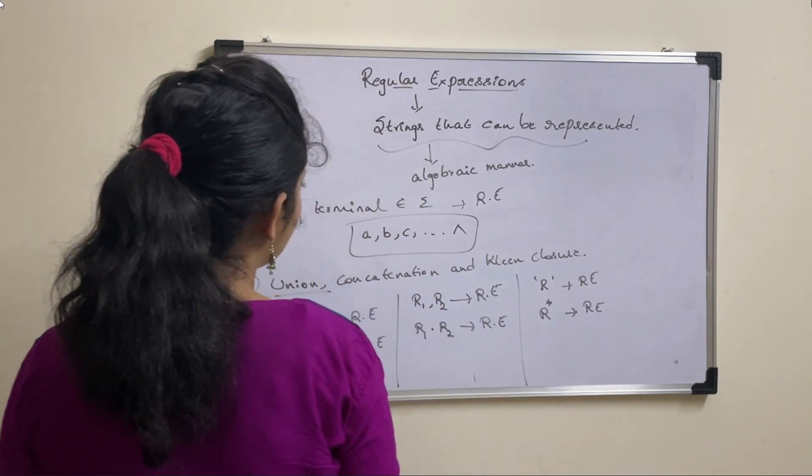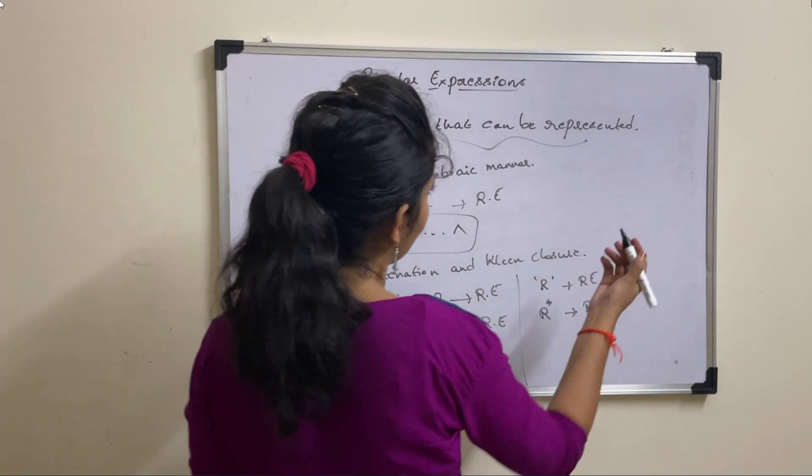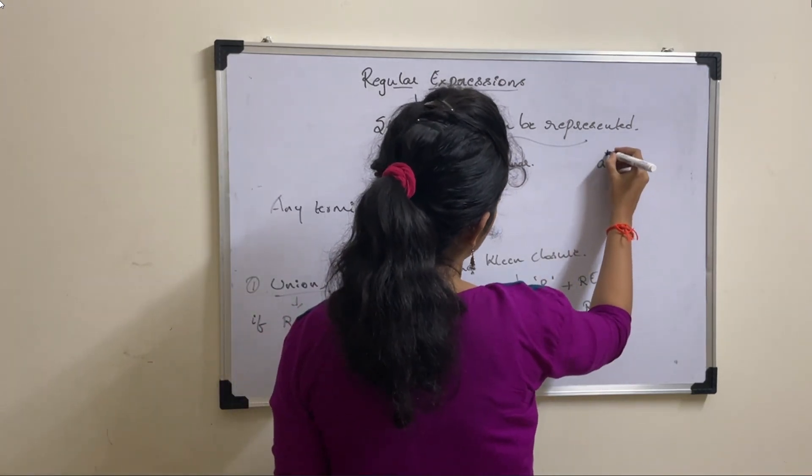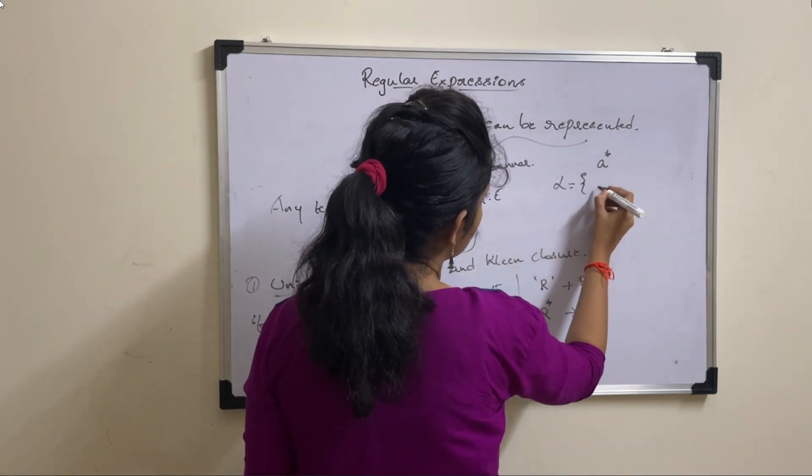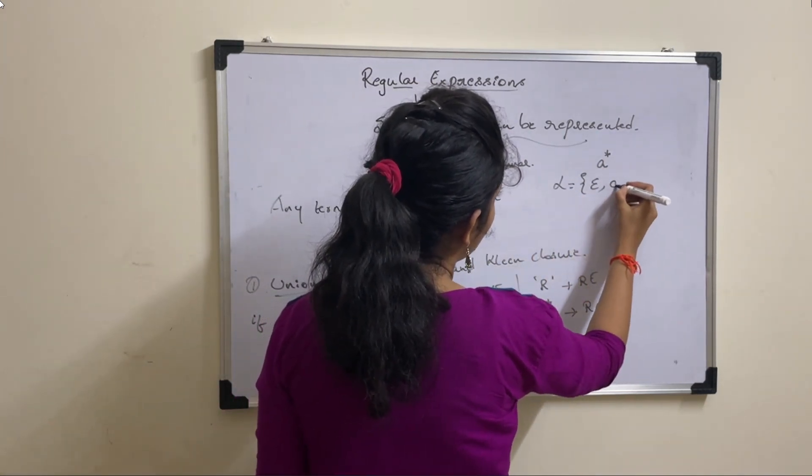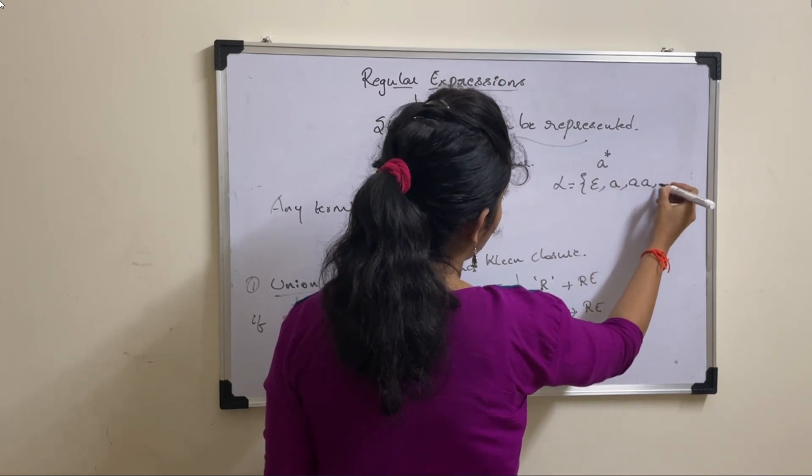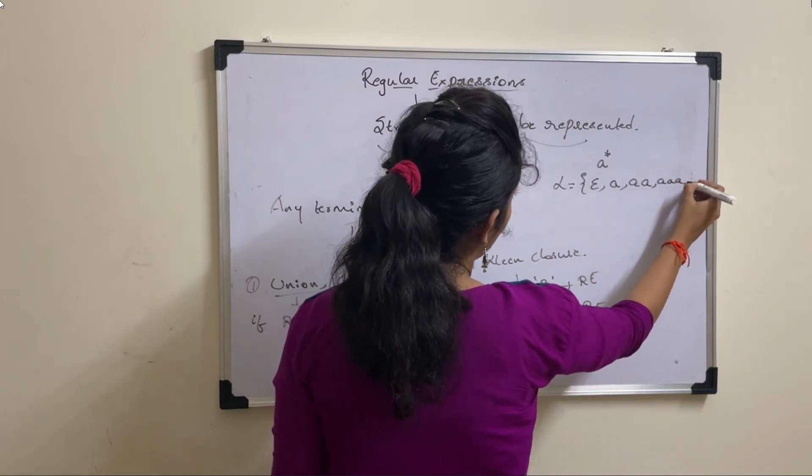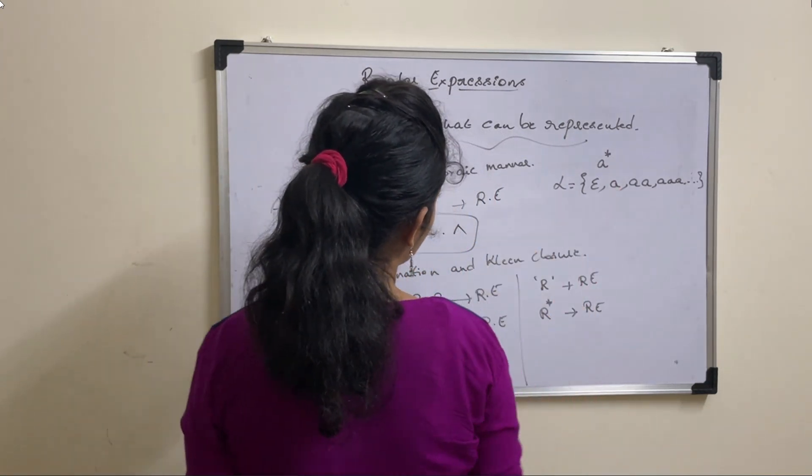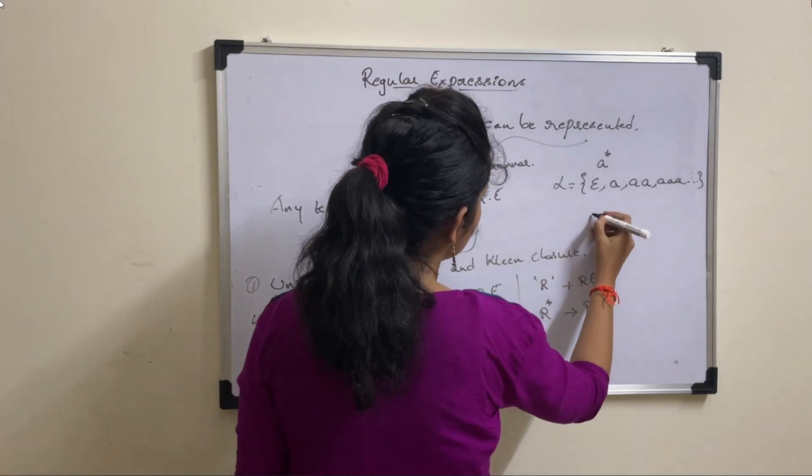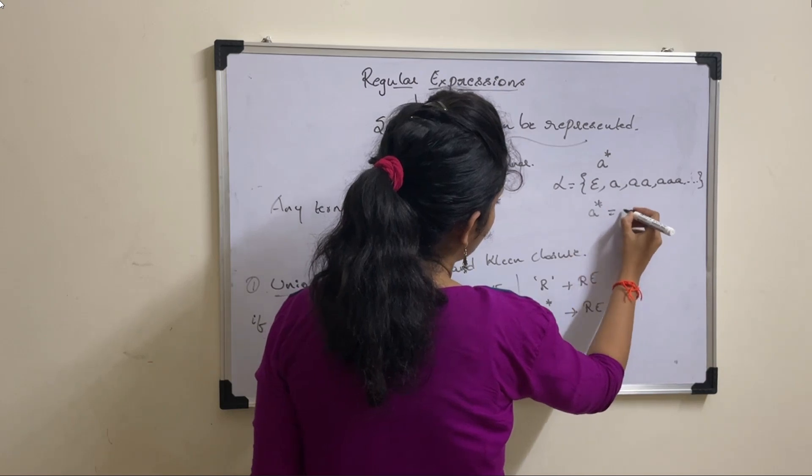How we are defining language for anything - say suppose we have A star, how we are writing language for this? It is nothing but any number of A's. You can have epsilon, single A, AA, any number of A's. How we are writing this language means, say suppose if we consider A star equal to A power N.